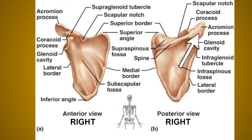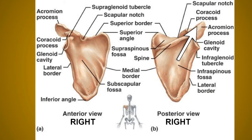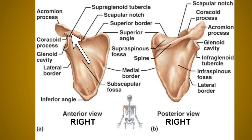The acromion process has two borders — medial and lateral — and two surfaces — superior and inferior. It also bears one facet for the clavicle. The coracoid process is directed forward and slightly laterally; it is bent and finger-like in structure and is an atavistic type of epiphysis.